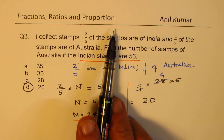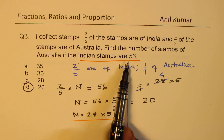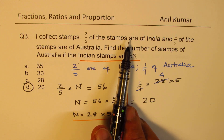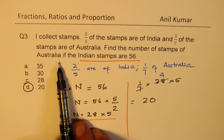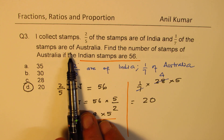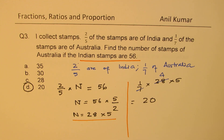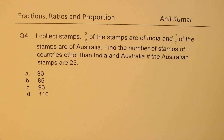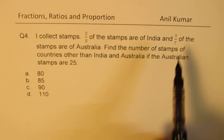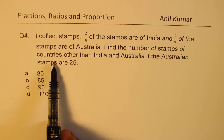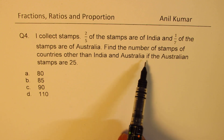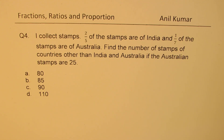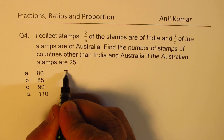We were given that two-fifths of the total number of stamps is 56. Once we find the total, one-seventh of that is the Australian count — and that is one-seventh of the total stamps, not of the remaining. That is a slight but important difference from the previous example. Last question: I collect stamps, two-fifths are of India, one-seventh are of Australia. Find the number of stamps of countries other than India and Australia if the Australian stamps are 25.